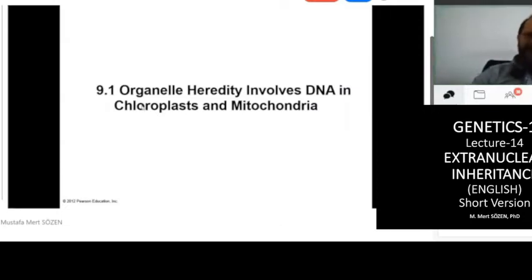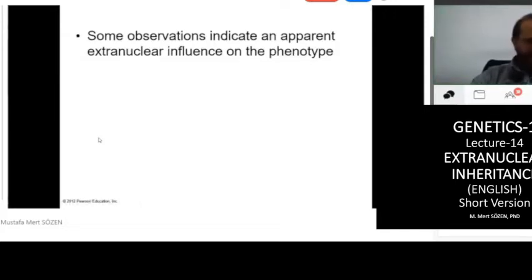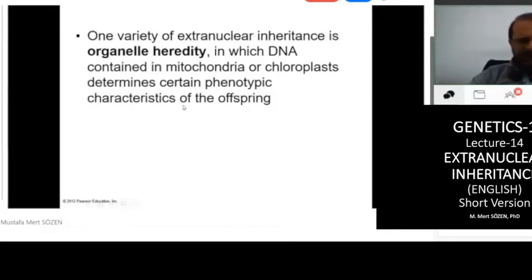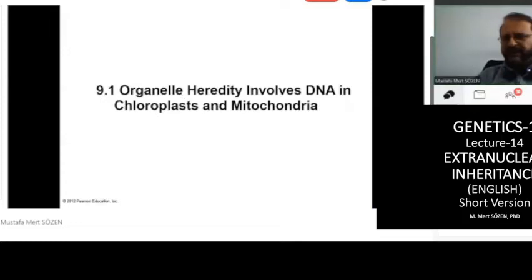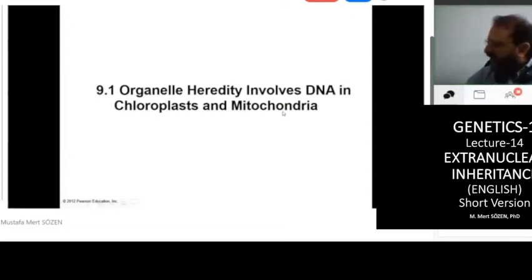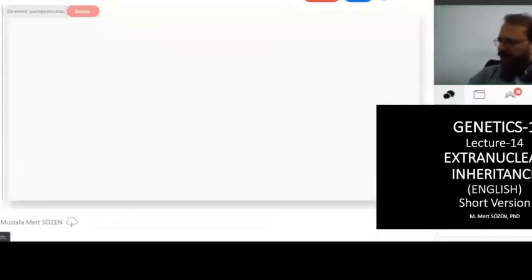Organelle heredity involves DNA in chloroplasts and mitochondria. There are also other types of extra nuclear inheritance. Let's learn their names first.